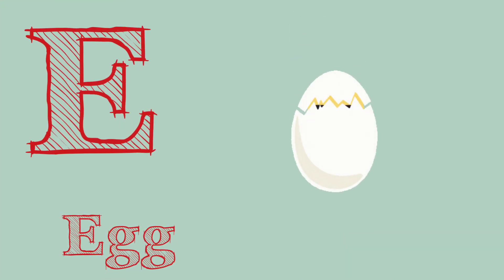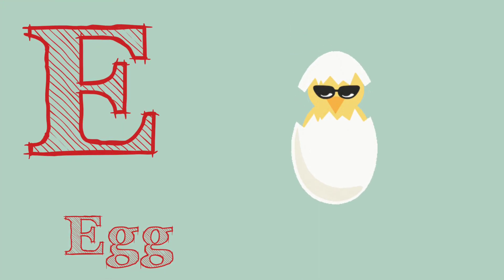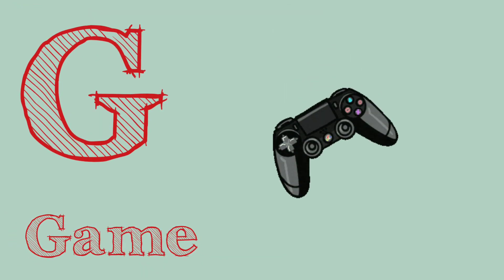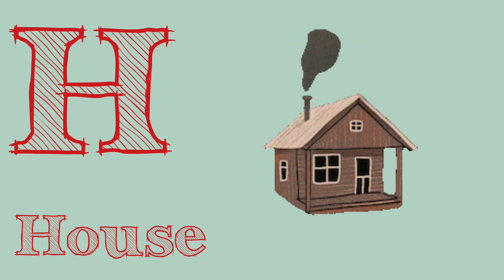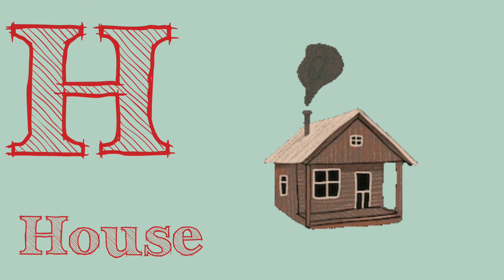E. E is for egg. F. F is for fish. G. G is for game. H. H is for house.